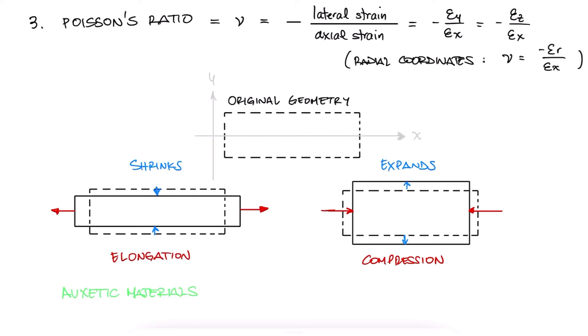Auxetic materials have a negative Poisson's ratio. This means that when an axis is stretched, the other two expand, and when the axis is compressed, the other two shrink. This is similar to how the Hoberman sphere toy behaves, but this is of course a bit of an unusual behavior.